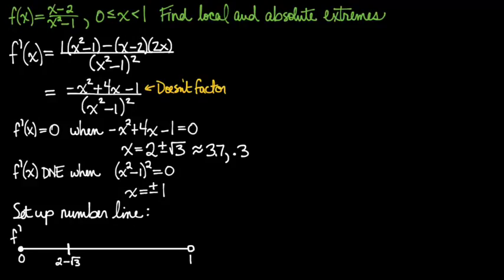3.7, 1, and negative 1 just don't count as critical points. There's only one critical point. So here my number line is complete.